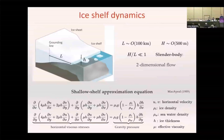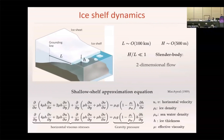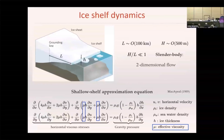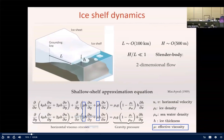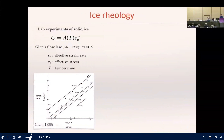Ice shelf is a flowing extension of grounded ice, which plays a critical role in slowing ice discharge into the ocean. To predict its motion, besides the shallow shelf equations, we also need to know the effective ice viscosity, which is determined by the ice rheology. Ice rheology describes how ice deforms in response to stress.